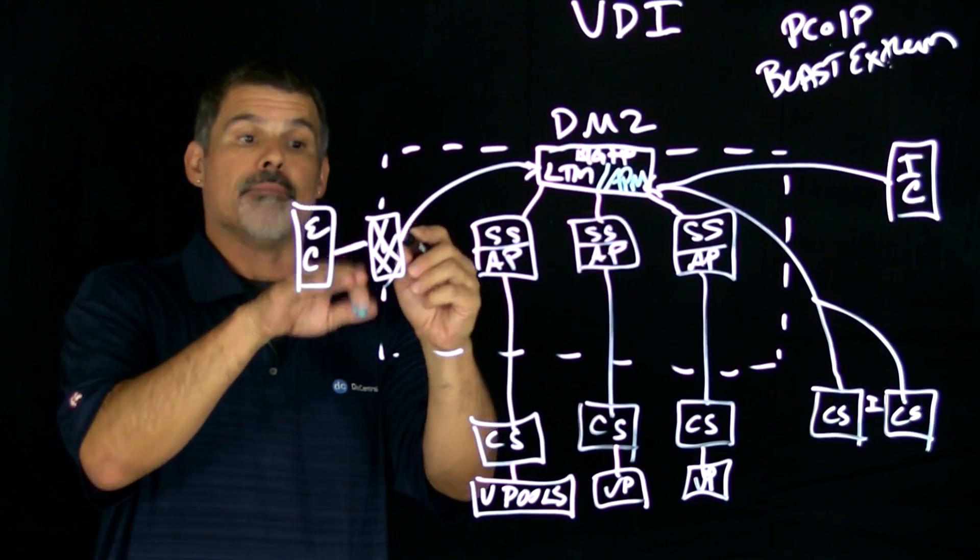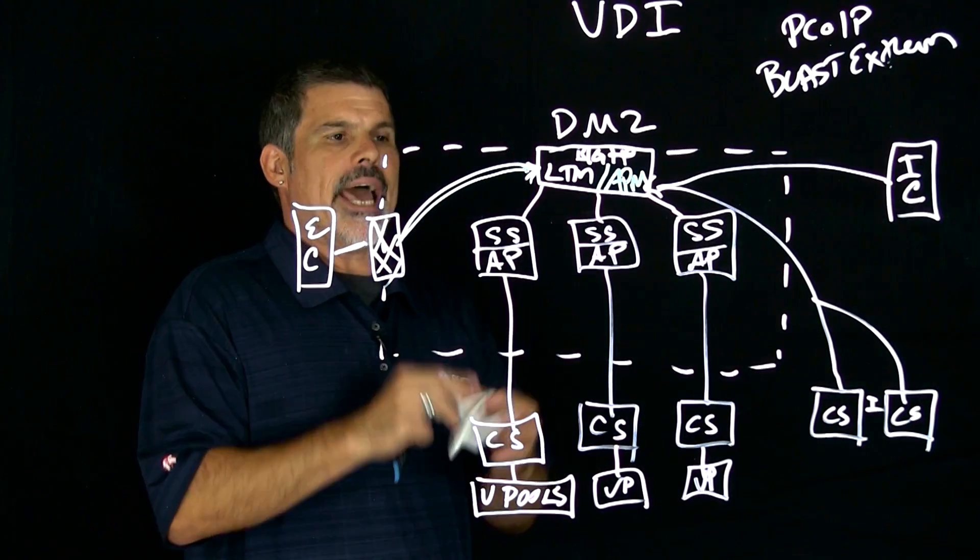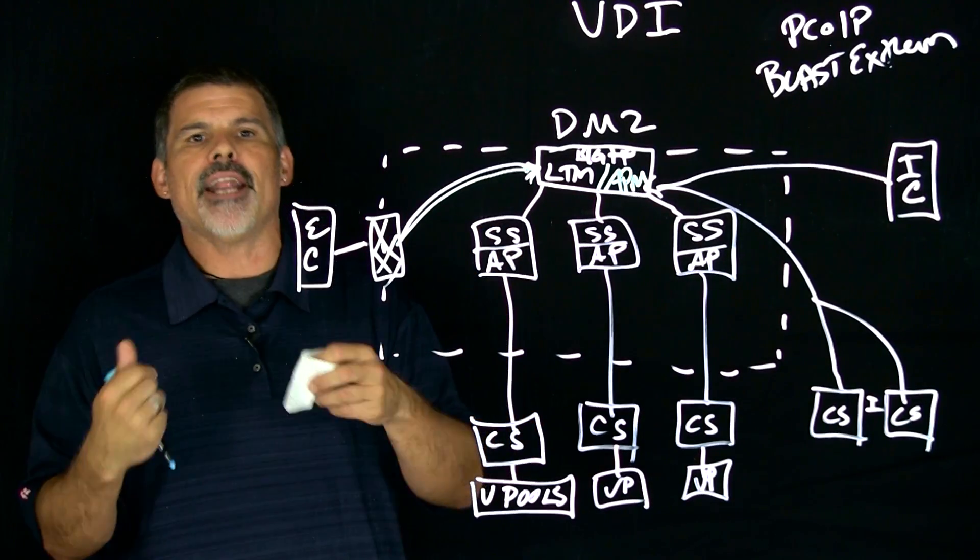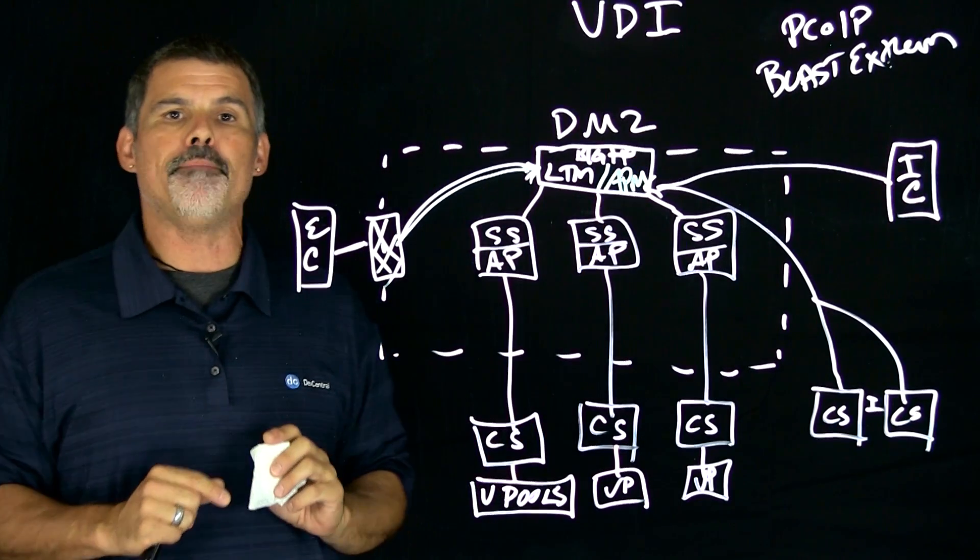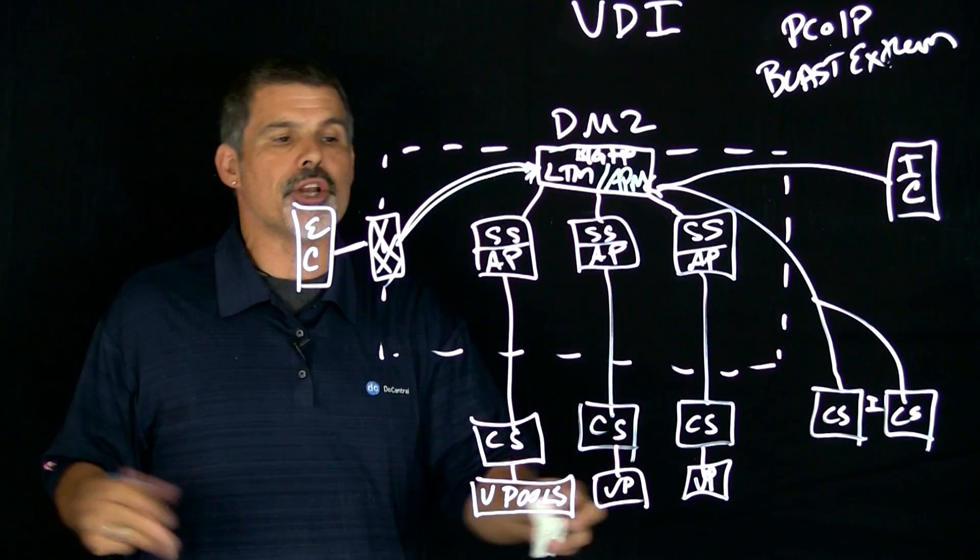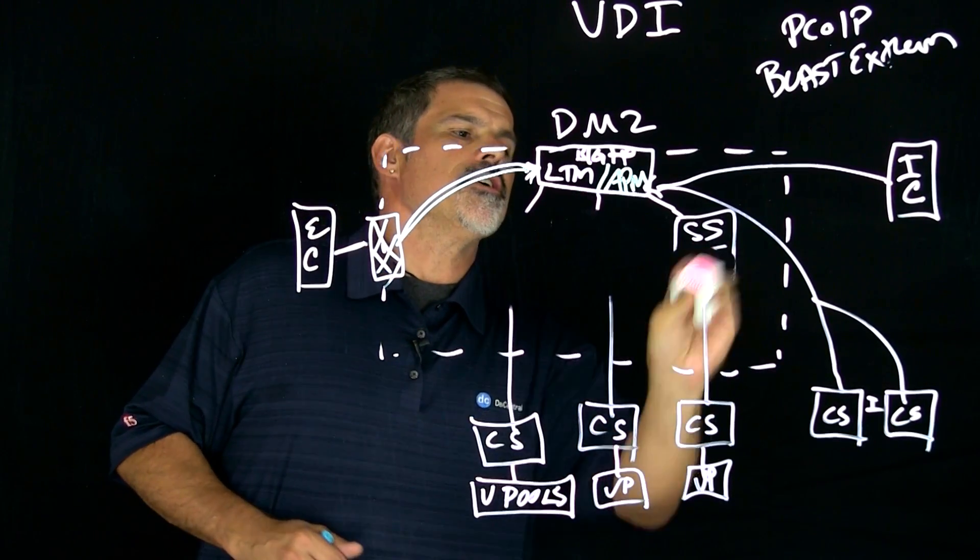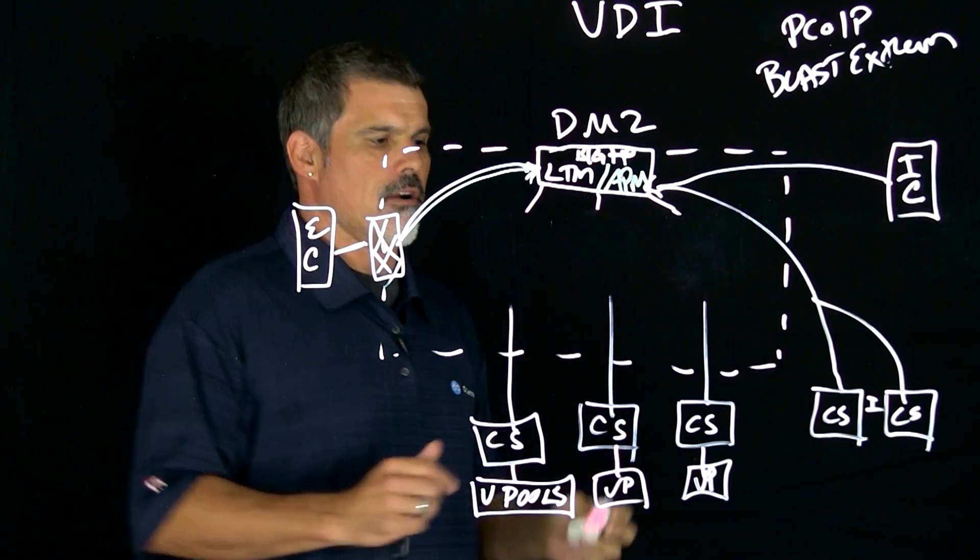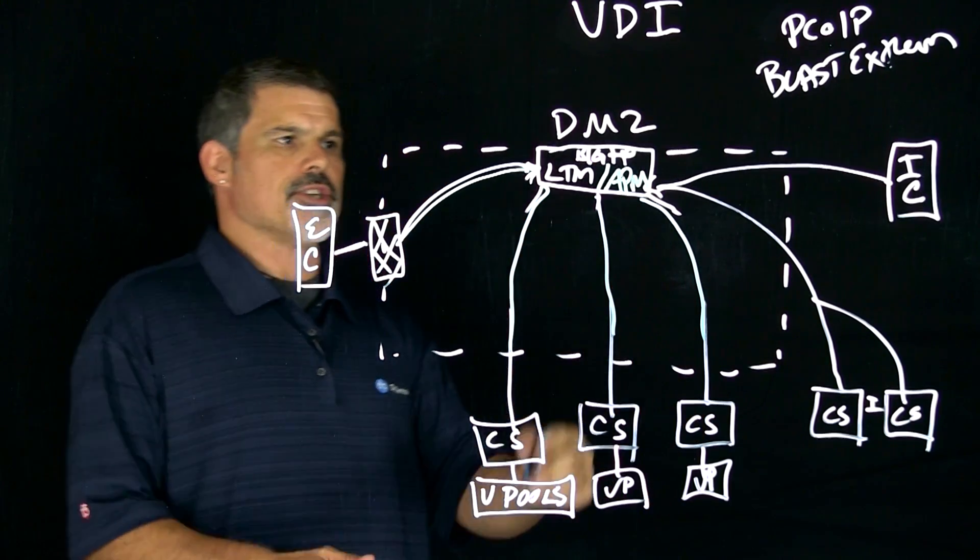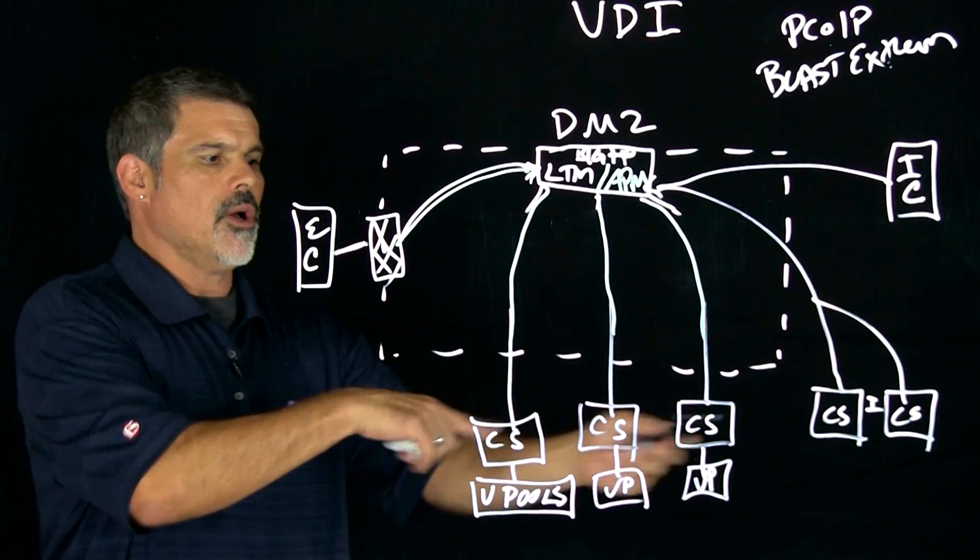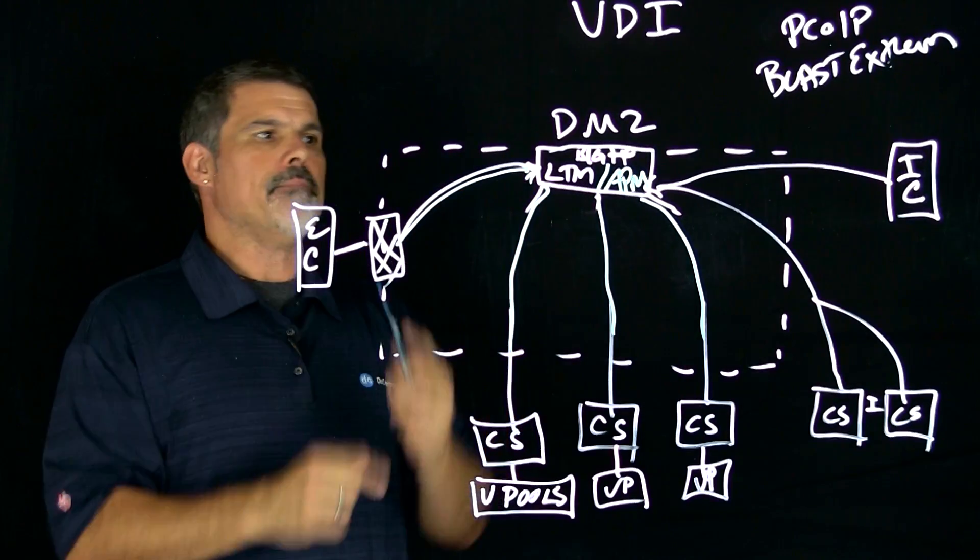Once you put access policy manager into the mix, now what happens is that the external client comes in, hits the firewall, goes to the LTM or the LTM APM combo. And since APM itself does the AAA, the authentication, the authorization, the accounting, APM can also proxy, natively proxy, the PCOIP and Blast Extreme protocols. And so now you can actually get rid of these access points or security servers, essentially eliminating a layer of infrastructure. When the connection comes in, now APM just goes directly to the connection servers because it understands the protocol, sends the authentication information and still does the same mechanism back here.